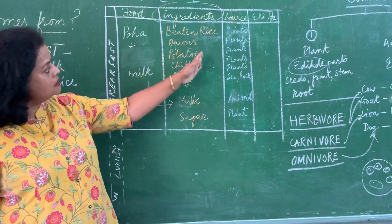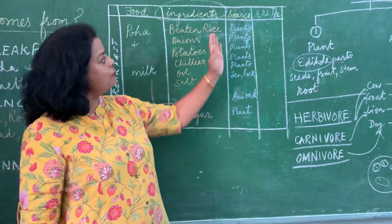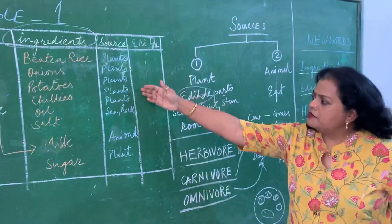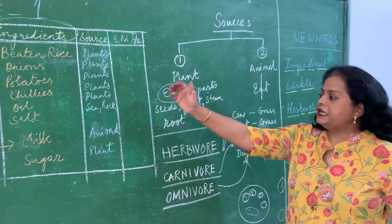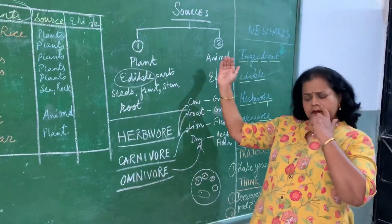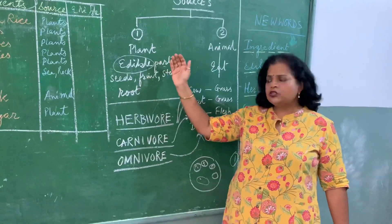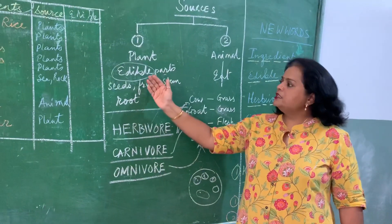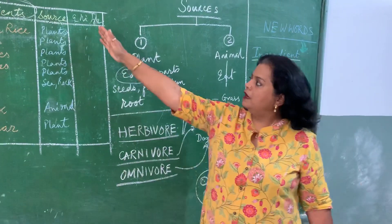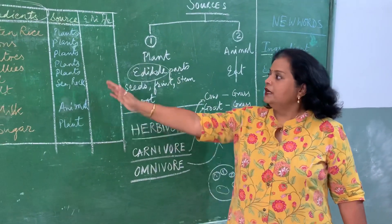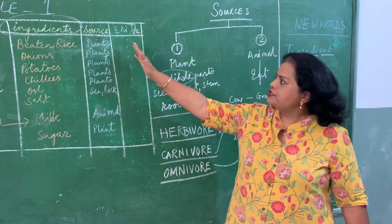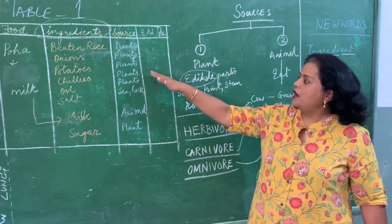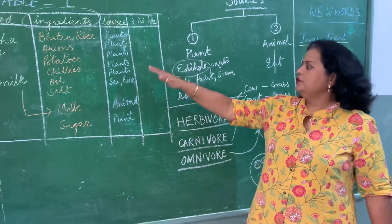So here you have seen the ingredients are coming from different sources. The sources we observed were basically plants and animals. The parts of plants which we eat are called edible parts. So we are taking different parts — this is one of our lessons. Now if you are using a plant, what part is it? What is the plant? You can fill it up.